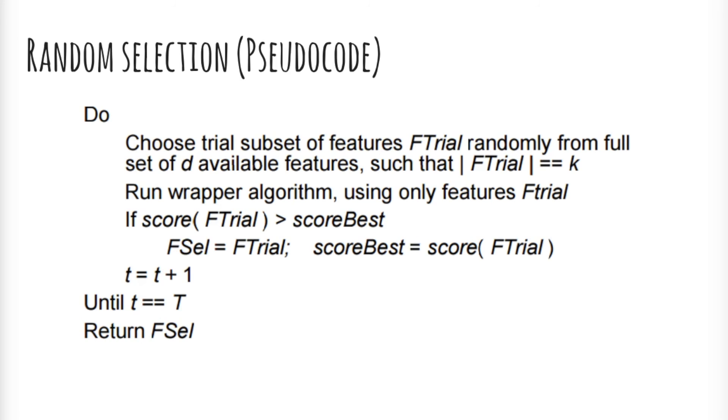Take a look at the pseudocode for random selection. First, choose the trial subset of features from the full set of available features. Run the wrapper algorithm using the trial subset of features. If the score is better than the best score to date, then update the list of selected features and the best score. Repeat these steps with another subset of features.